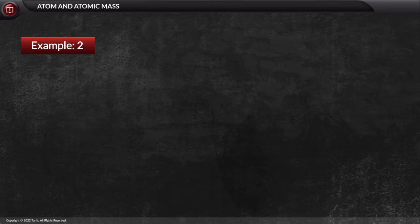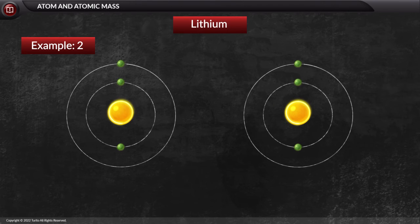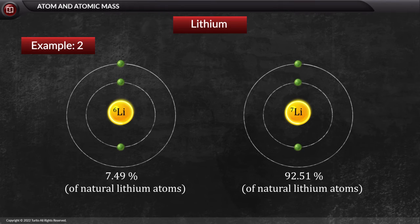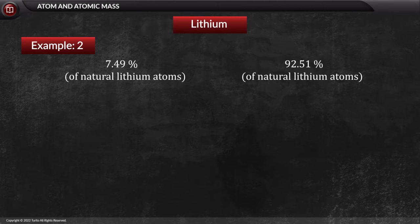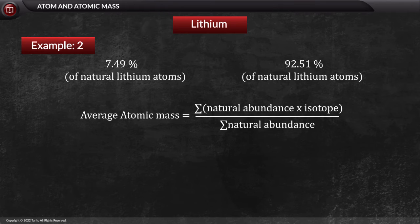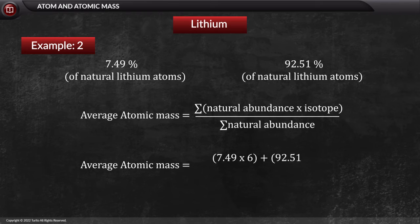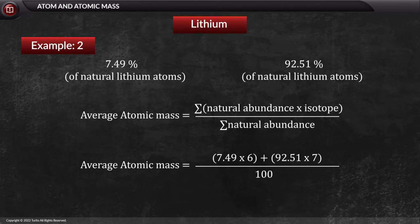The next question: what will be the atomic mass of lithium, having two naturally occurring isotopes — ⁶Li and ⁷Li — with relative abundances of 7.49% and 92.51% respectively? Using the formula for average atomic mass: (7.49 × 6 + 92.51 × 7) / 100 = 6.941 amu.